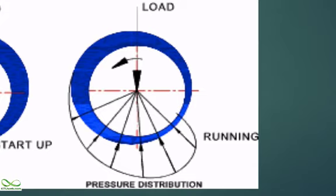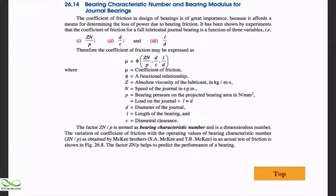To identify whether wedging is possible or not, and whether proper lubrication is possible or not, a designer can use a particular equation or relation. This relation is known as the bearing characteristic number, and we will be explaining the importance of bearing characteristic number and the peculiarity of bearing modulus.